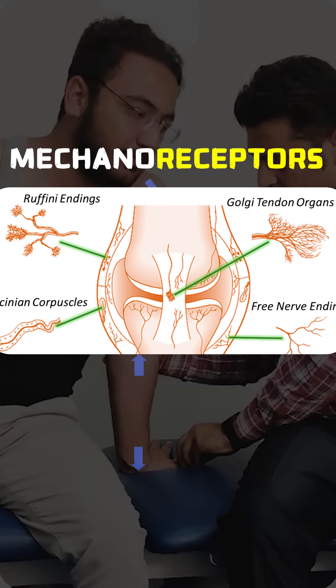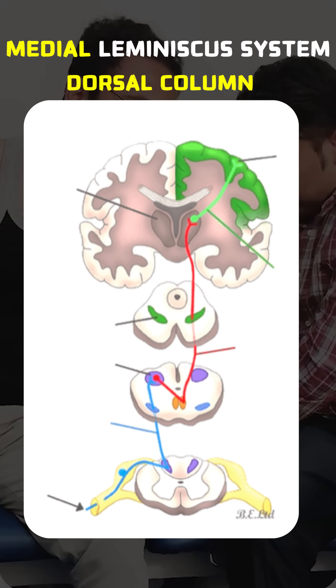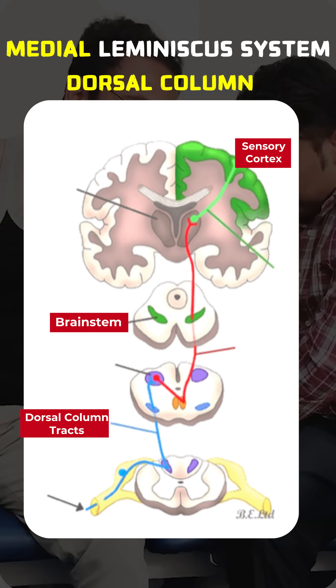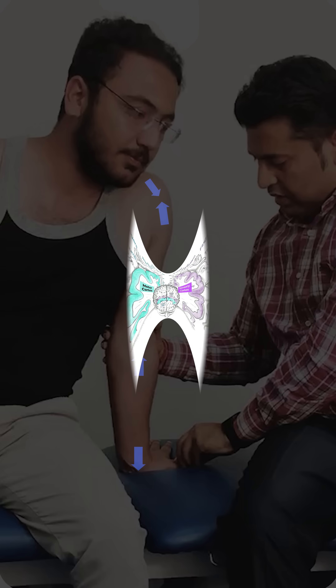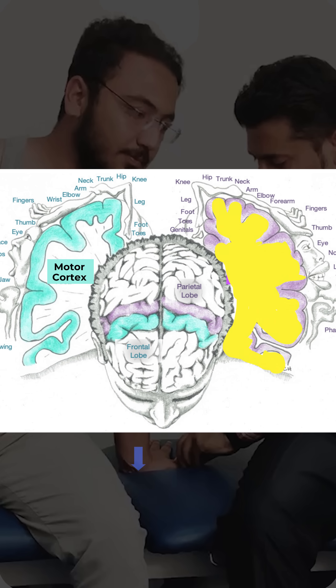This sensory information is then sent to the brain via the medial lemniscus system through the dorsal column tracts. Once the information reaches the sensory cortex, it is analyzed and sent to the neighboring motor cortex via the association areas.